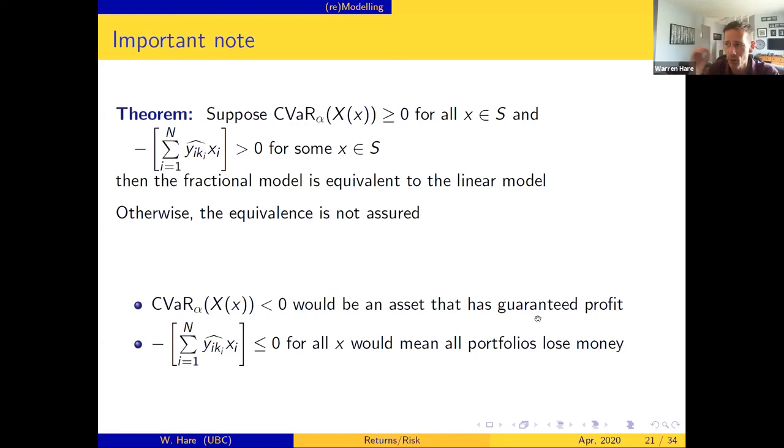So bringing that back to real world language, conditional value at risk greater than or equal to zero for all x means that every asset has a risk to it. So conversely if there's an asset where the conditional value at risk is strictly negative, that means that asset has a guaranteed profit - banks know what to do with that one, so let's just take that one, throw it away and reduce the problem to not have any of this. The negative losses being bigger than zero for one x means that there's at least one portfolio where you're making an expected return, or said another way, if that negative loss is always negative that would mean every single portfolio in this problem loses money - banks know what to do about that too, they just change their interest rates. So these two conditions may be restrictive in some settings but in the terms of portfolio optimization they're extremely reasonable.